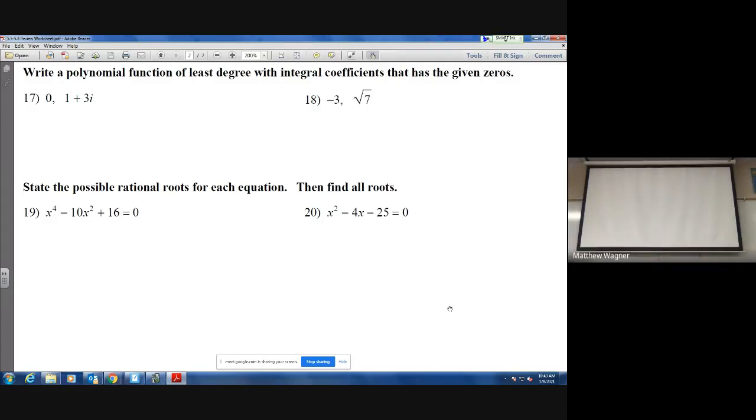All right, we're going to take a look at problem 17. We're writing a polynomial function of least degree with integral coefficients with the given zeros. It looks like we're going to have three zeros in this case. Keep in mind, 1 minus 3i is also a solution, since complex answers always come in pairs.